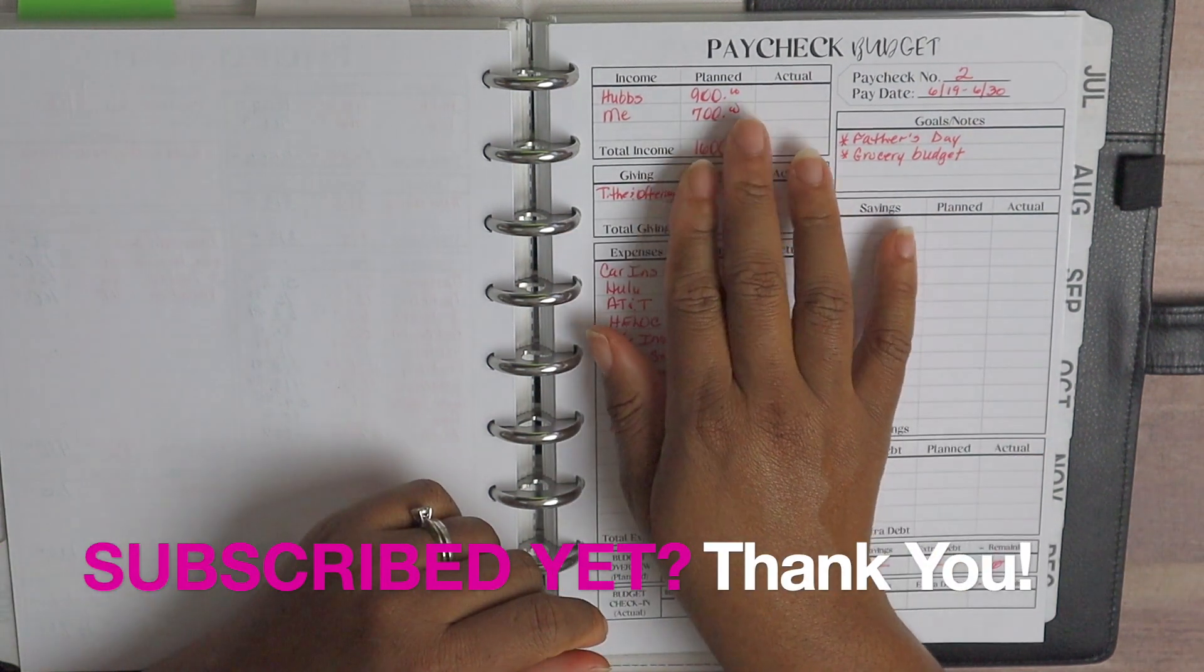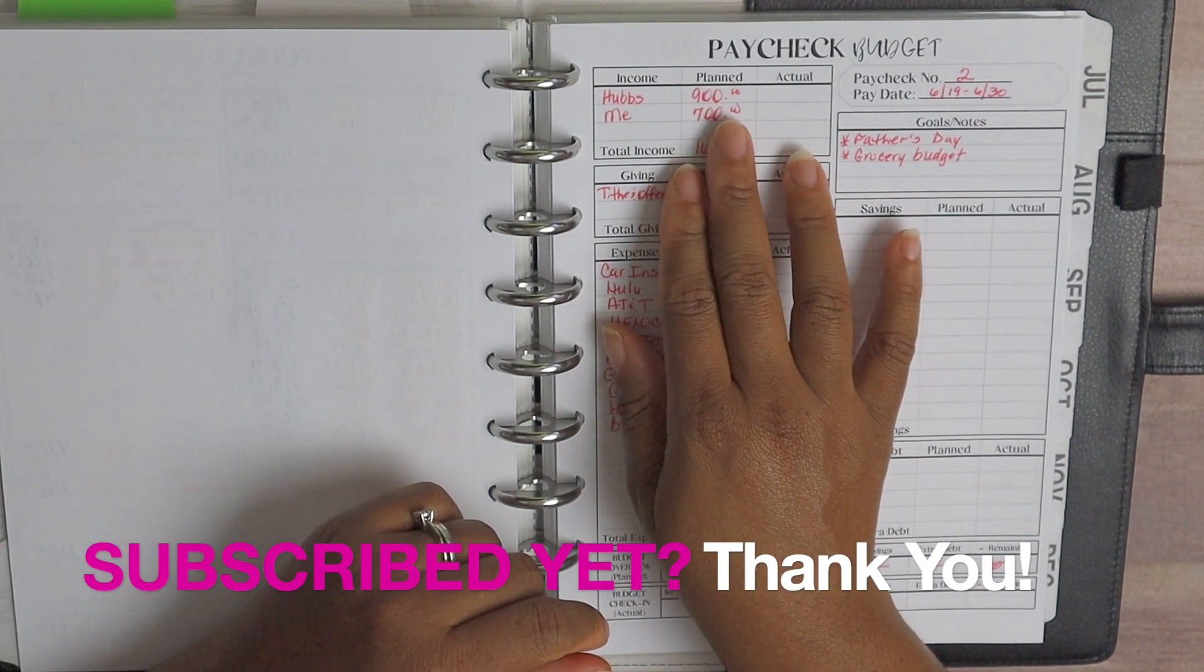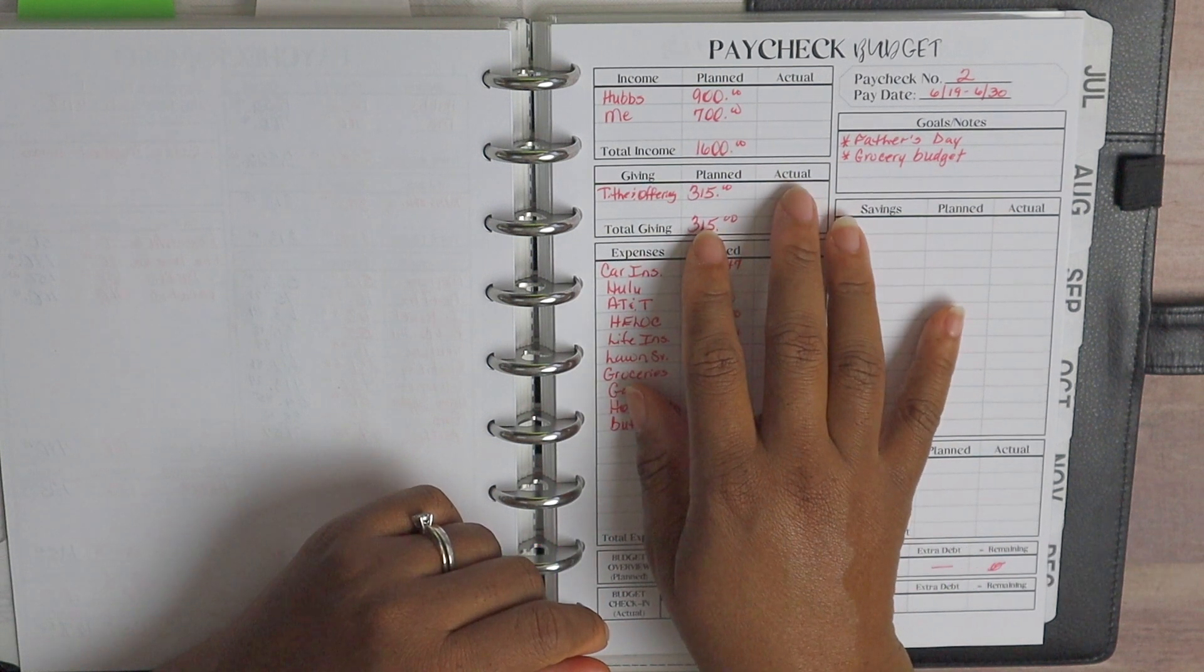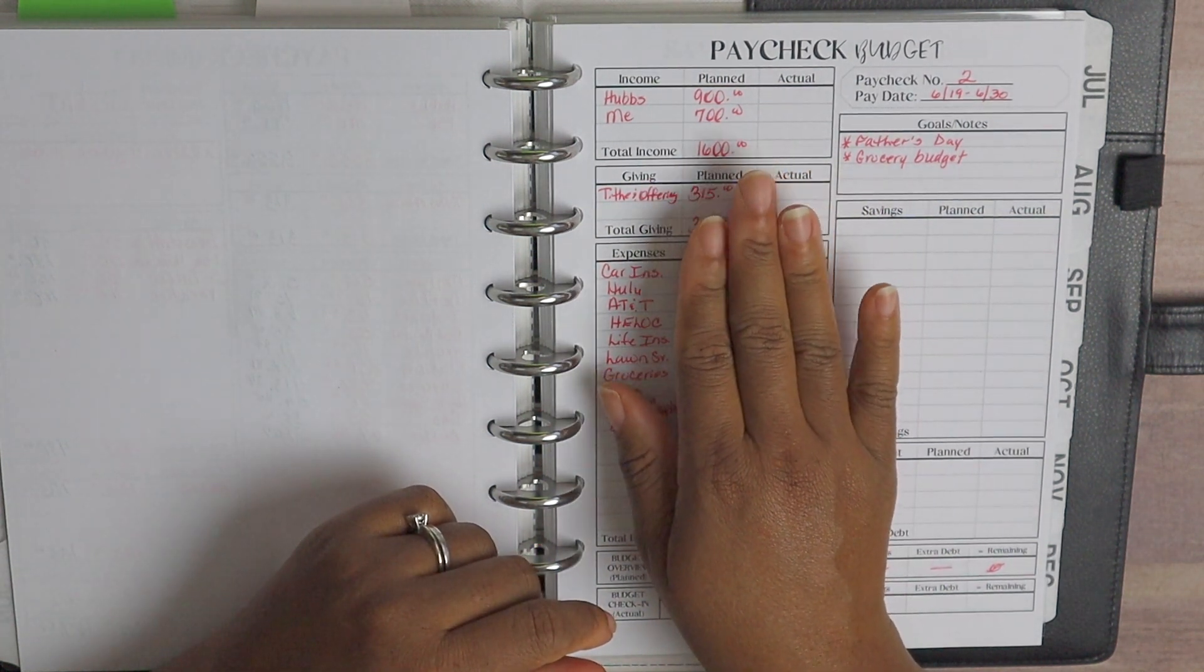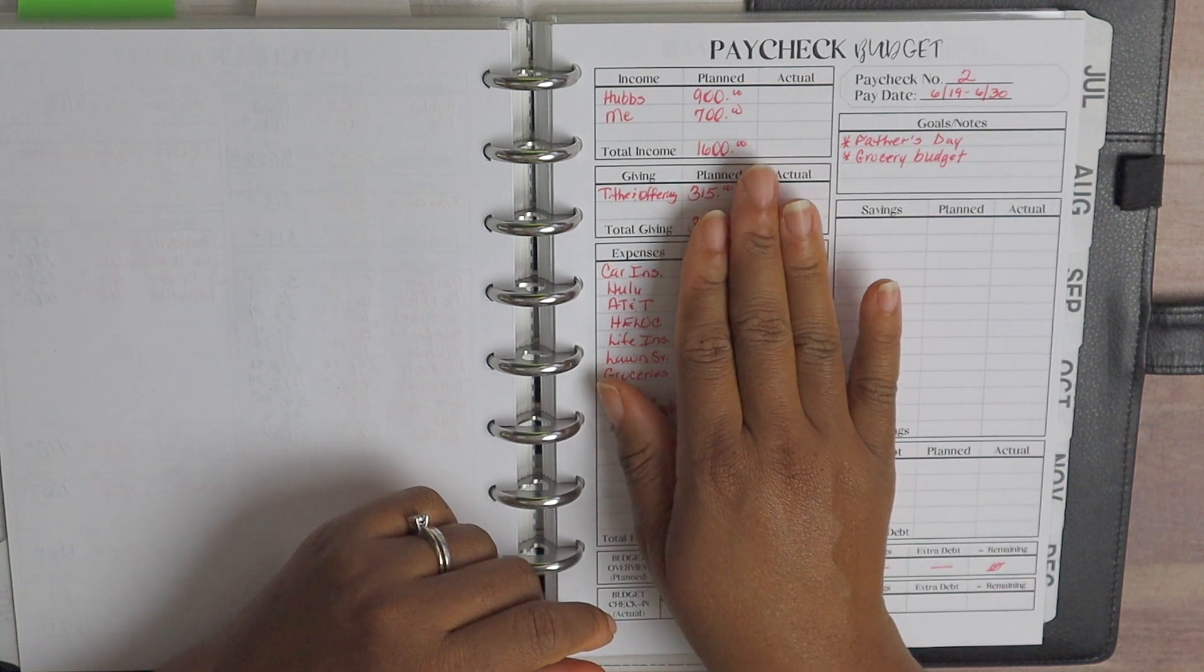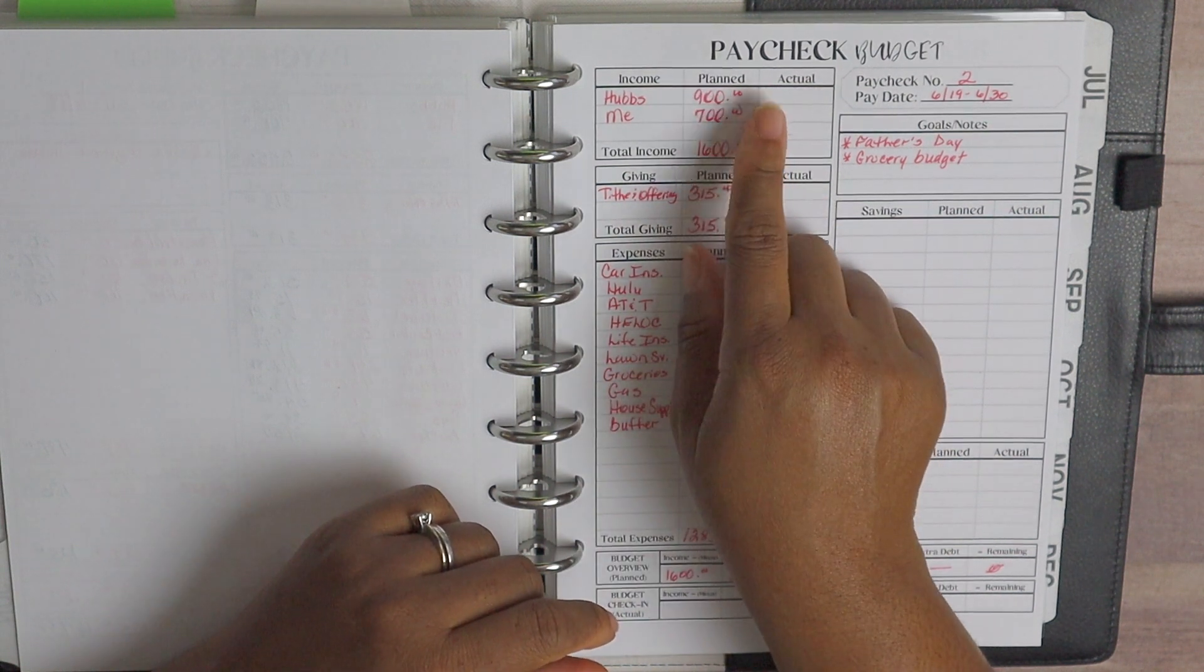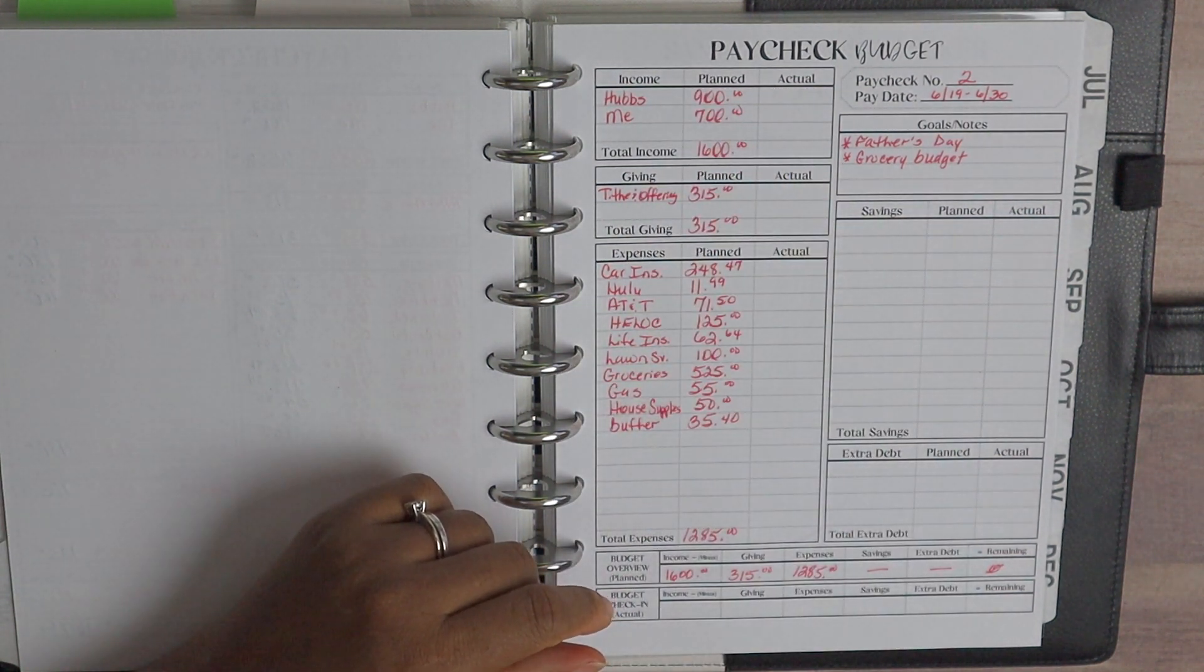Now we did plan for hubs $900 for paycheck number two. They had a project going on at their job so he did receive some overtime. The actual amount for paycheck budget number two came in at $1,572, which is awesome.